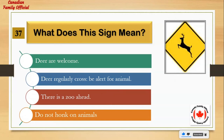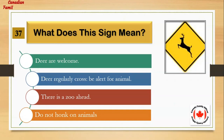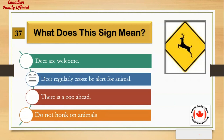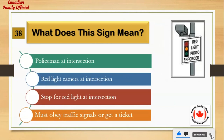What does this sign mean? Number 1: deer are welcome. Number 2: deer regularly cross — be alert for animals. Number 3: there is a zoo ahead. Number 4: do not honk at animals. And the answer is: deer regularly cross — be alert for animals.